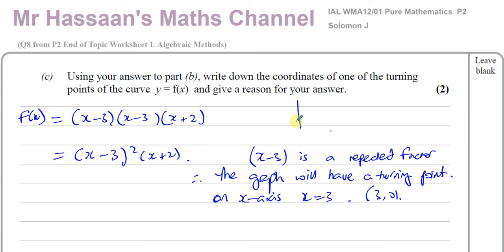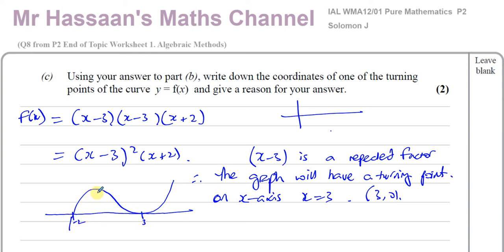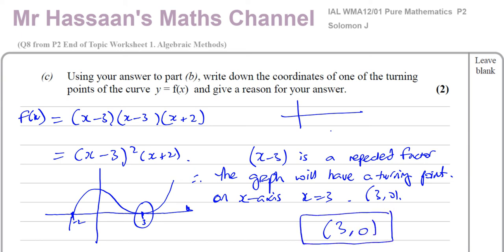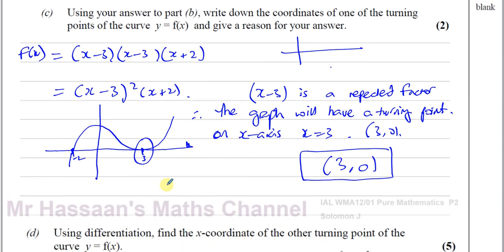When x minus 3 is a repeated factor, the graph touches the x-axis at x equals 3 and turns — it doesn't cut through. The graph will cross at x equals minus 2 and touch at x equals 3. So x minus 3 being a repeated factor is the reason, and the coordinates of that turning point are (3, 0). That's part C, which uses knowledge from P1.